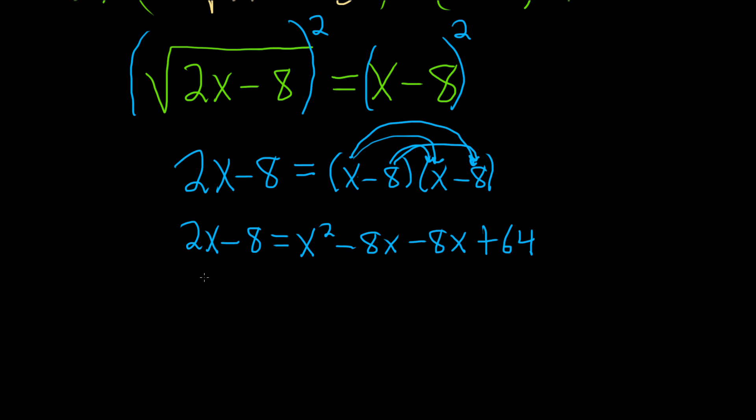Let's see what's happening here. So here we still have 2x minus 8. On the right-hand side, we have some like terms. x squared minus 8x minus 8x is going to give us minus 16x. And then we have our plus 64.